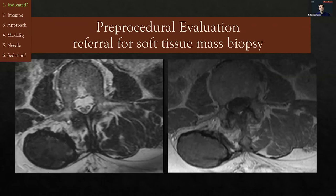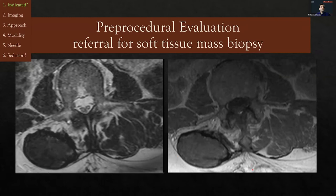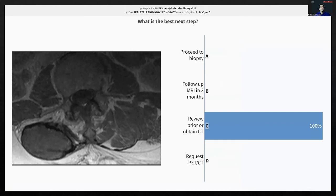Let's take a look at a case with a question for audience response. We received a referral for biopsying a lesion in the right perispinal muscle. I'm showing you an axial T2 and an axial T1 at the level of the mass. The question is: what's the best next step — proceed to biopsy, do a follow-up MRI in three months, review prior or obtain CT, or request a PET CT?